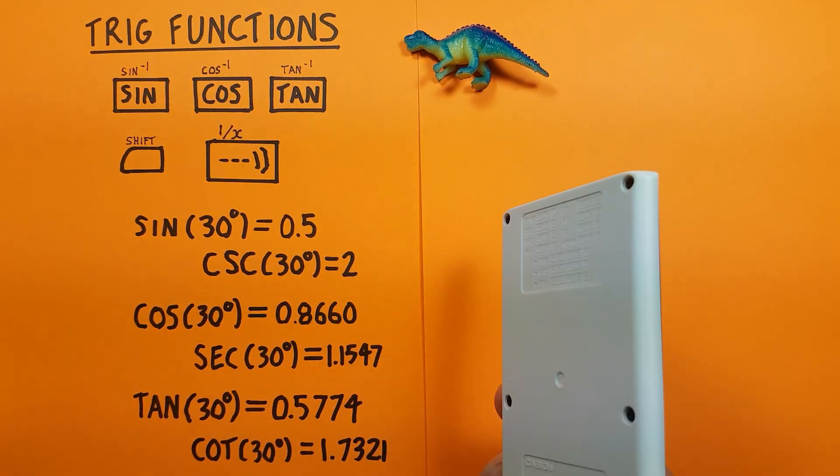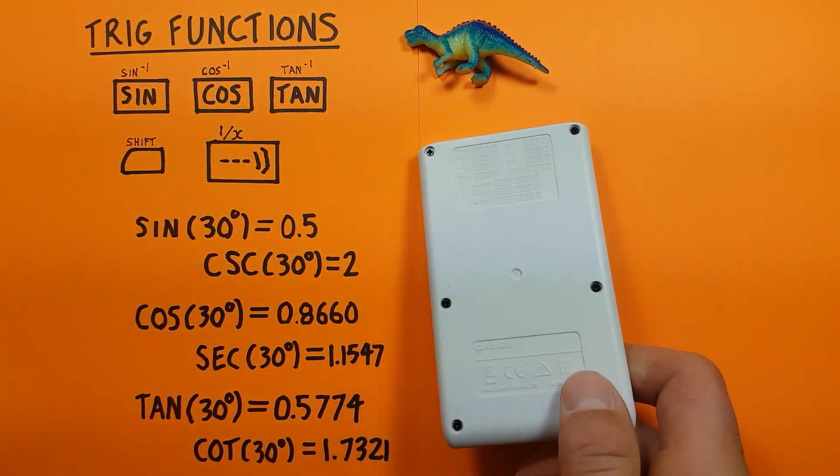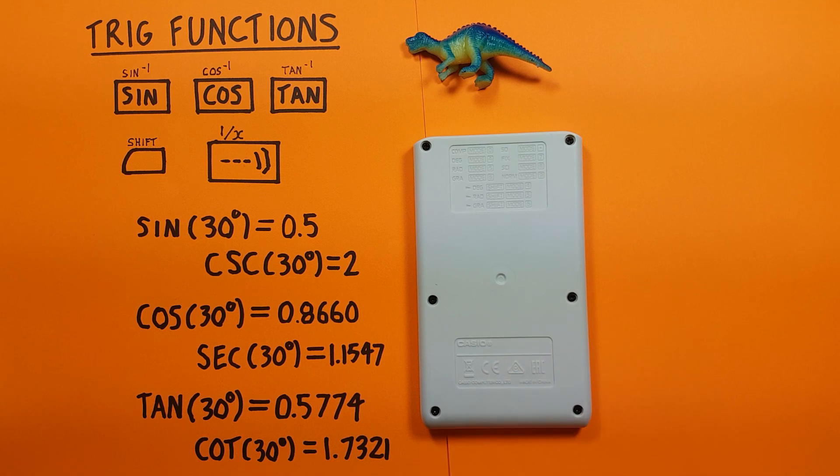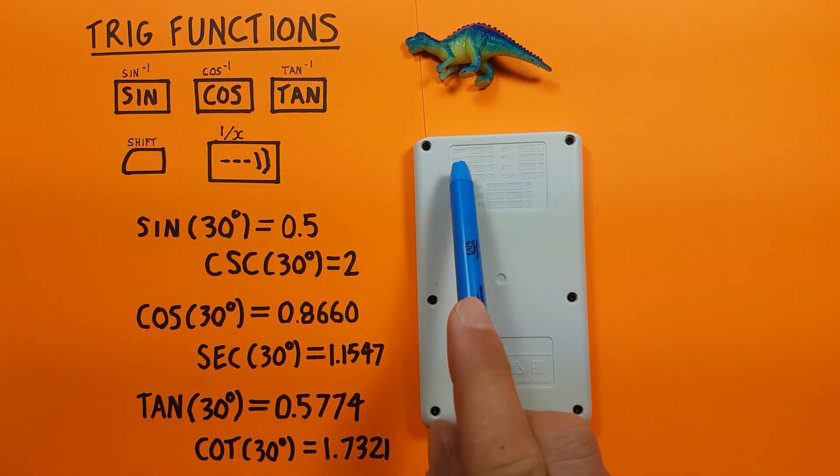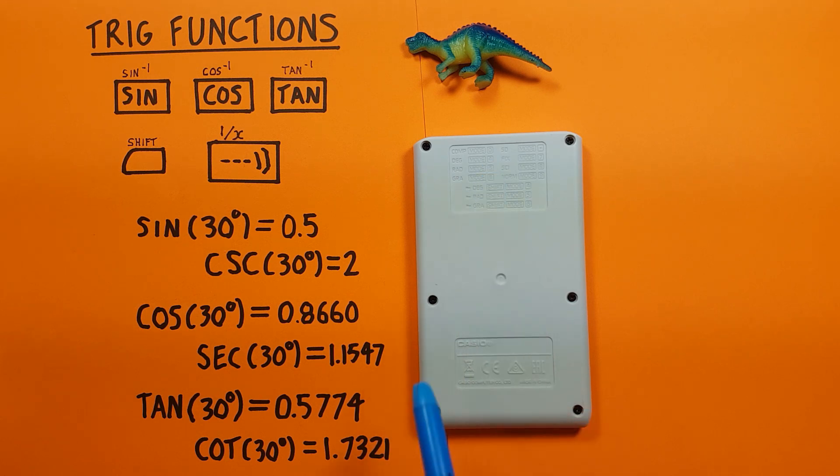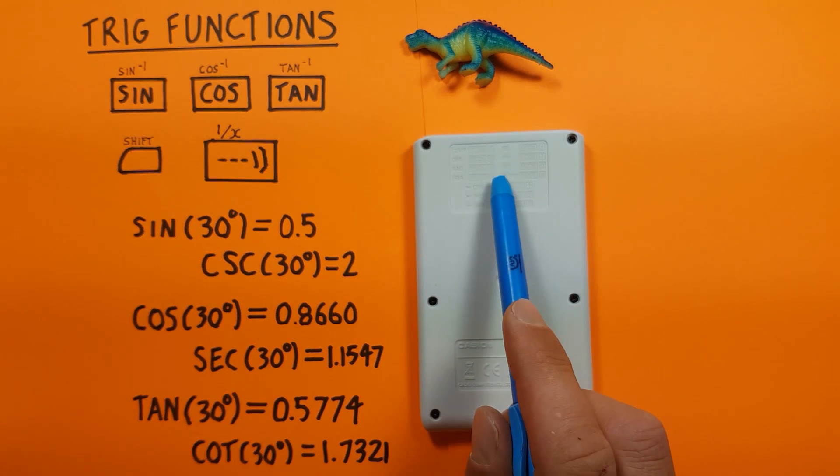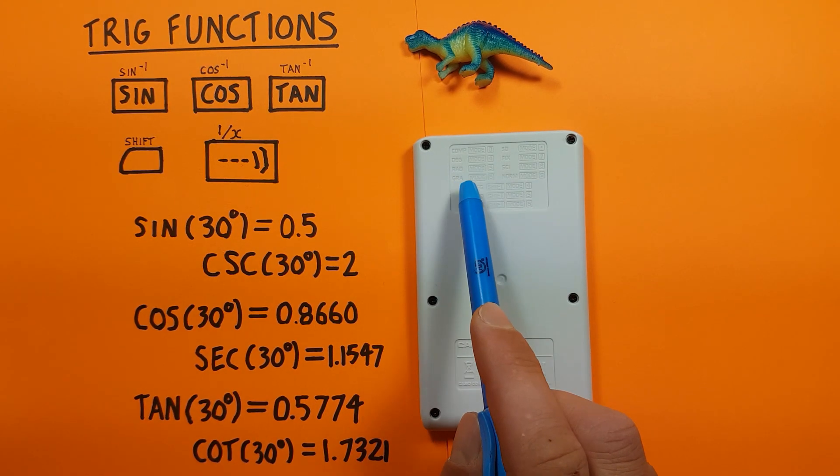If you look at the back of your calculator, you can see an outline of the modes. So mode four changes your calculator to degrees, mode five to radians, and mode six to gradians.